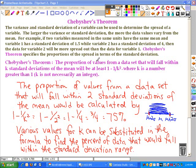The empirical rule must have a bell-shaped distribution or symmetrical normal distribution shape. We've already seen that variance and standard deviation of a variable can be used to determine the spread of the variable. The larger the variance or standard deviation, the more the data values vary from the mean.